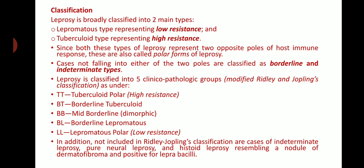Leprosy is mainly classified into two types: lepromatous type, representing low resistance, and tuberculoid type, representing high resistance. Cases in between fall in the borderline or intermediate category. According to Ridley and Jopling's classification, the five clinicopathologic groups are: TT (tuberculoid polar — high resistance), BT (borderline tuberculoid), BB (mid-borderline or dimorphic), BL (borderline lepromatous), and LL (lepromatous polar — low resistance).